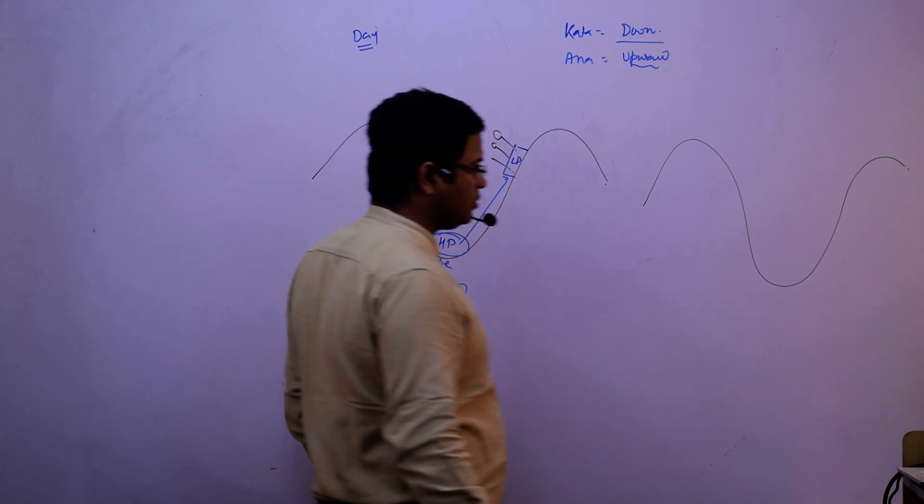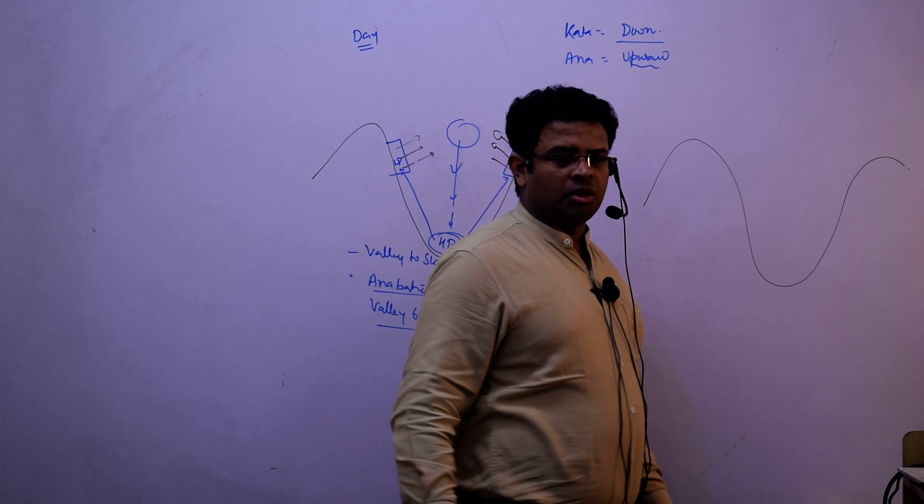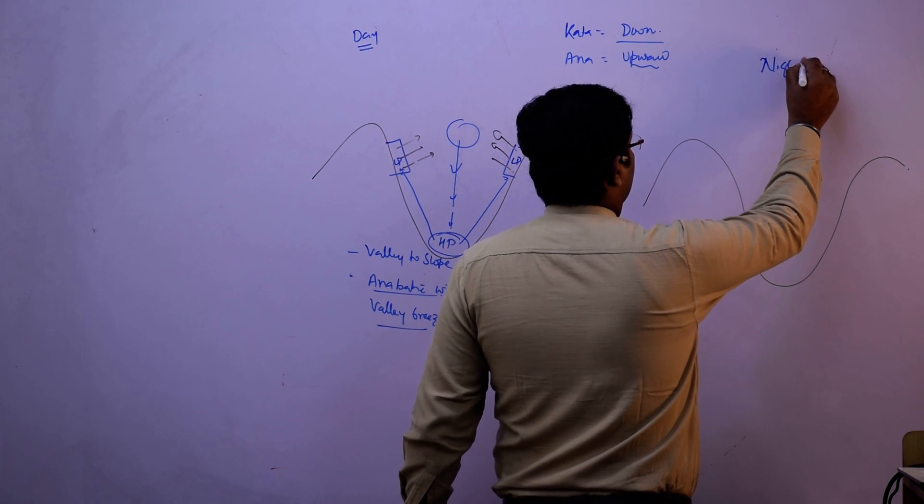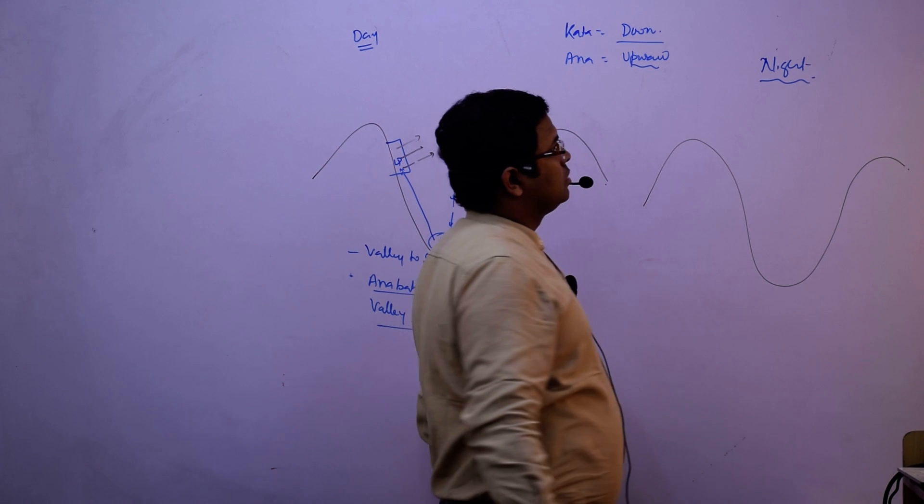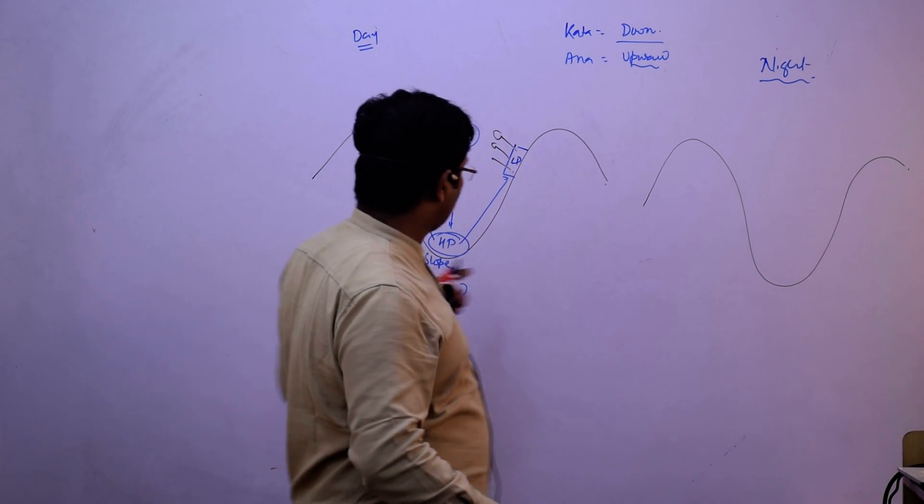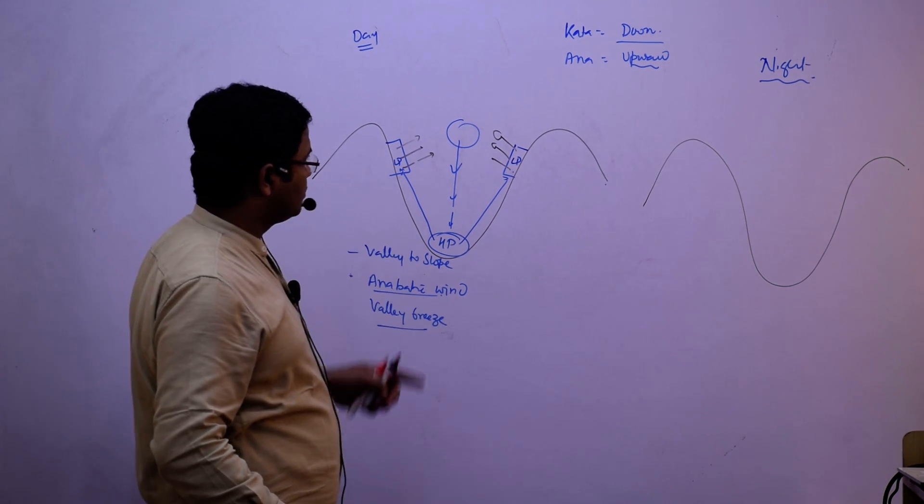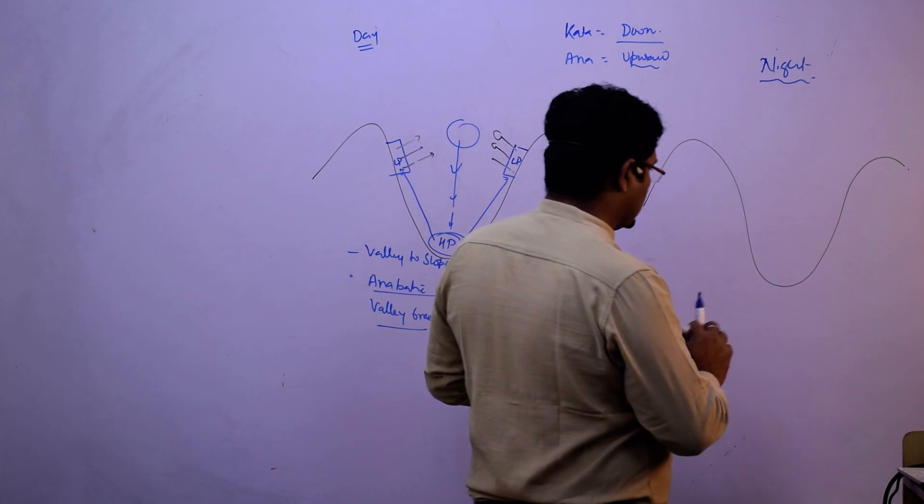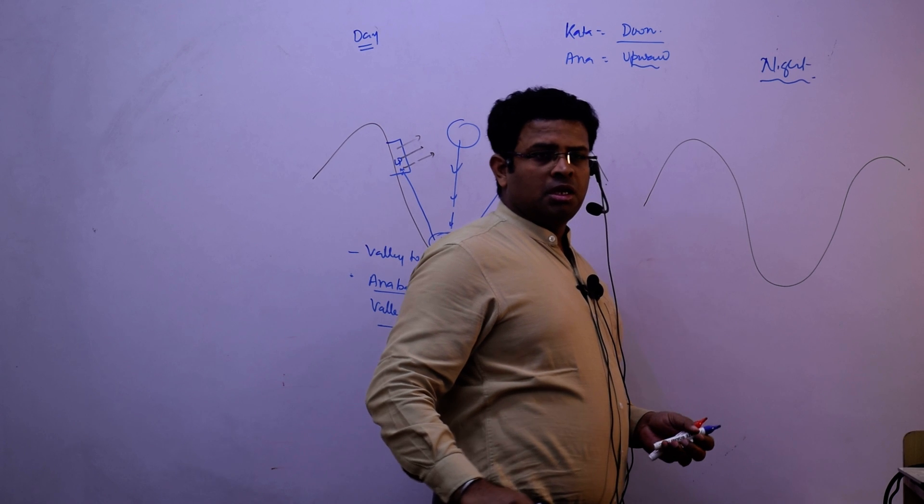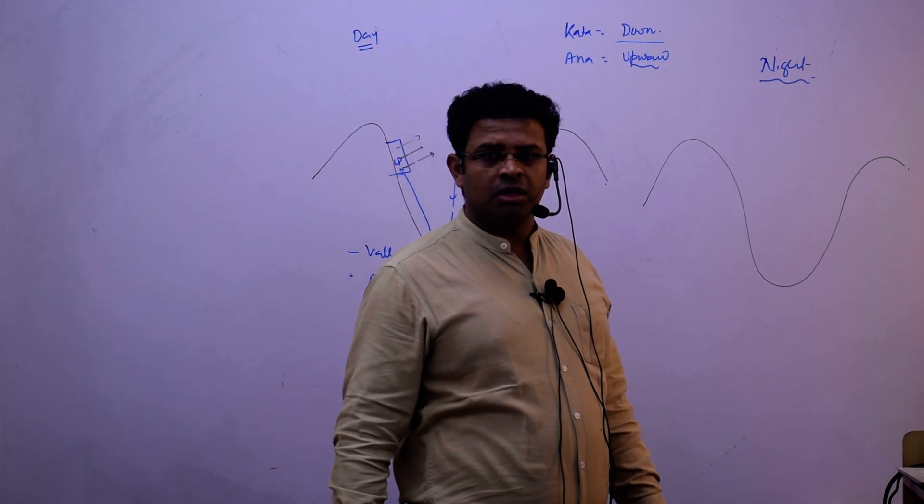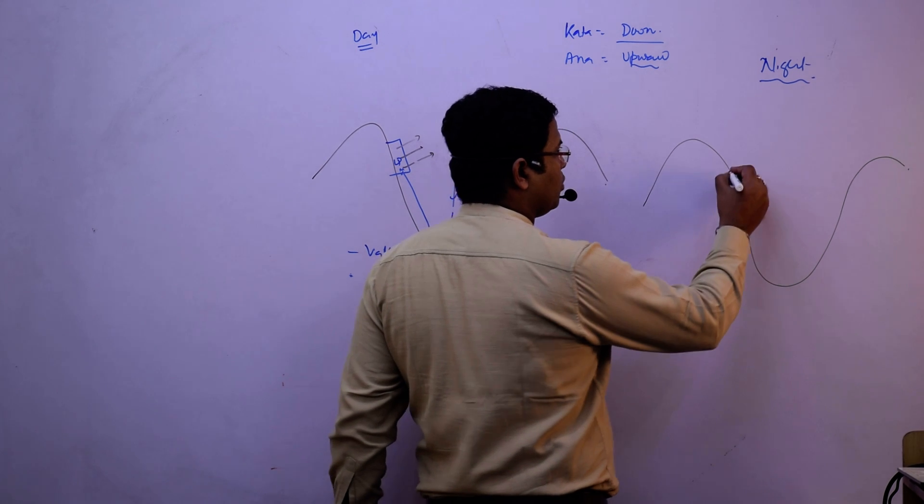Now coming towards night time. Night, to this wind what will we say? What will we say? I said that it is Anabatic Valley Breeze. Night time, what will happen? No sun rays. And then higher height will be colder and the lower height will be comparatively warmer. So this will be colder, high pressure.